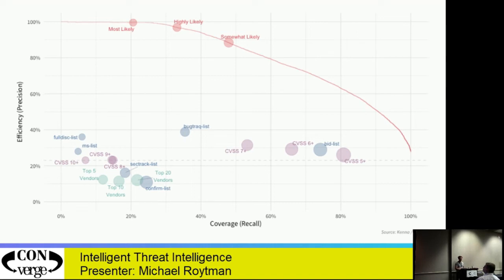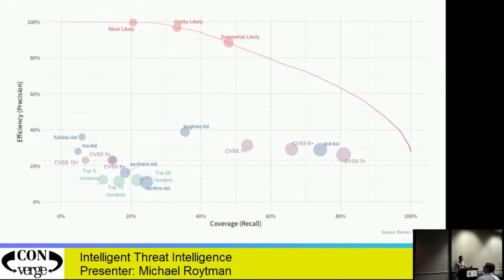If you do CVSS-7+, you do significantly better — about 33% efficiency and 55% coverage. One in three of your actions is actually effective at reducing risk, and you've got 55% coverage. But look at the size of that bubble — that's how much effort you'd have to put in to achieve that strategy. About 30,000 CVEs you'd have to remediate, which might take years for the average organization. And really what I'm saying is: here's a slice of the data, we fix this, we don't fix this, and when we get here we've achieved some level of efficiency and coverage. That's not a very stochastic strategy for a very stochastic market.